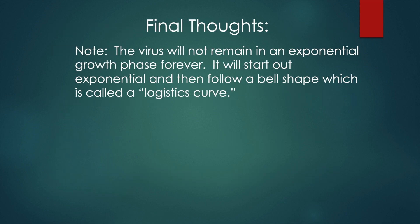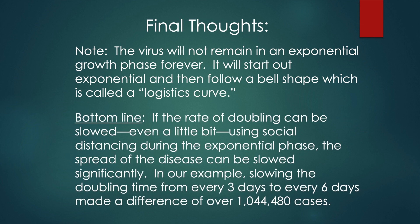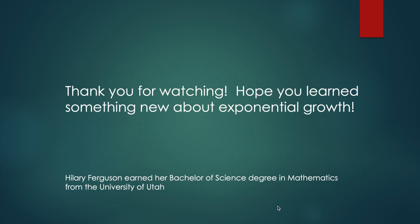The virus will not remain in an exponential growth phase forever — it will start out exponential, and then follow a bell shape, which is called a logistics curve. The bottom line is, if the rate of doubling can be slowed even a little bit using social distancing during the exponential phase, the spread of the disease can be slowed significantly. In our example, slowing the doubling time from every 3 days to every 6 days made a difference of over 1,044,480 cases. Thank you for watching — hope you learned something new about exponential growth, and if nothing else, you can impress your friends by solving the penny problem.